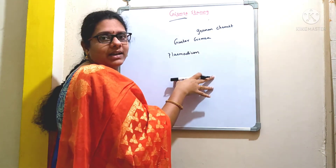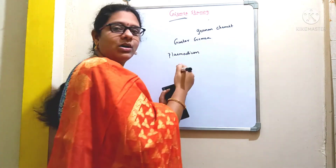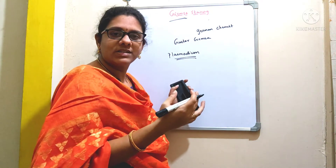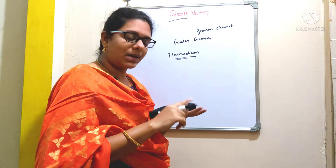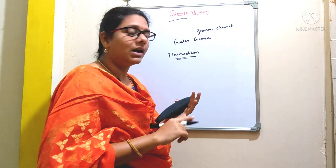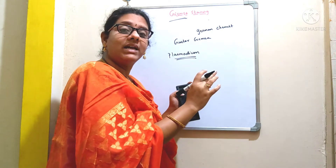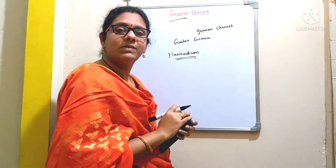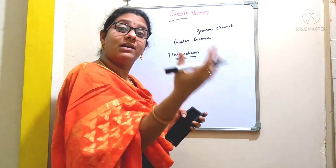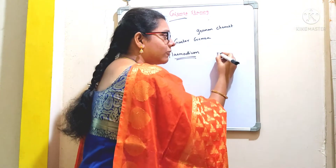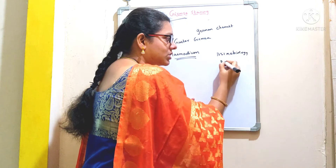This staining technique was primarily used for the identification of Plasmodium, which is a malarial parasite. The causative agent of malaria is Plasmodium, and there are different strains like Plasmodium falciparum, Plasmodium malariae, Plasmodium ovale, and Plasmodium vivax. This Plasmodium can be easily identified with the help of this Giemsa staining technique, and moreover this staining technique has several other applications in the field of microbiology and pathology.